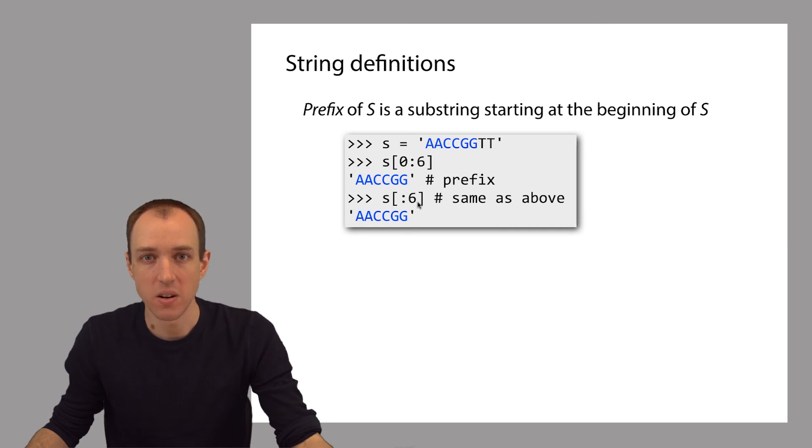This syntax you see down here where the 0 is omitted and we just say colon 6 inside the square brackets is just another way of saying what we set up here. If the 0 is omitted, there's an implied 0.